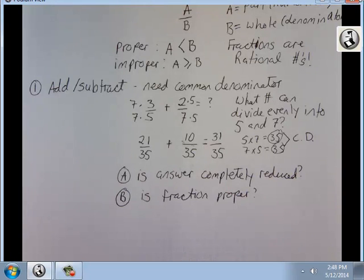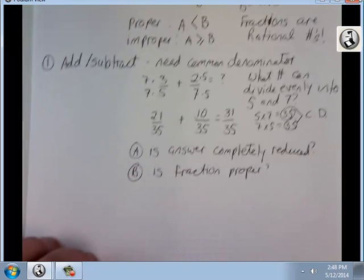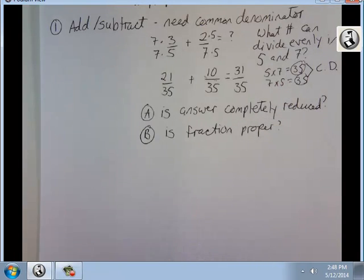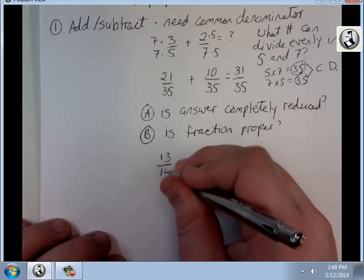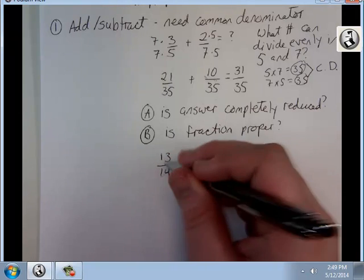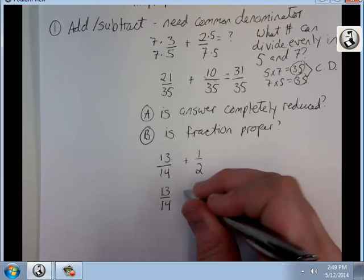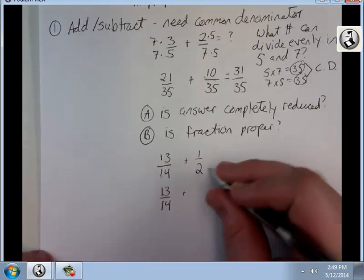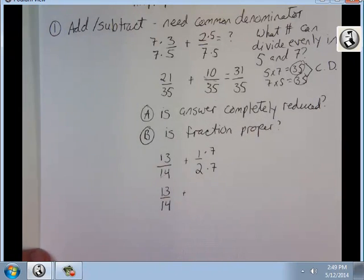That's how you add and subtract fractions. Subtraction works the exact same way. But we're going to do one now where one of these questions we're going to answer with a no. Let's try 13 out of 14 plus 1 over 2. What's my common denominator going to be? The first number that divides evenly into both 14 and 2 is 14. This one already has a 14, I can leave it alone. This 1 half, I need to get that denominator to be 14. 2 times 7 gives me 14, so I have to multiply top and bottom by 7. That gives me 7 over 14.